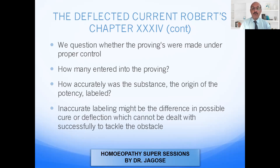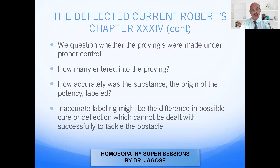We must question whether the provings were made under proper control. How many entered into the provings? How accurately was the origin of the potency labeled? Suppose the label of one remedy by mistake goes on to another substance and is labeled incorrectly — then naturally your whole proving would go wrong. Inaccurate labeling might be the difference in possible cure or deflection which cannot be dealt with successfully to tackle the obstacle.